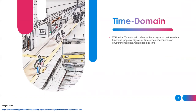In Wikipedia, time domain refers to the analysis of mathematical functions, physical signals, or time series of economic or environmental data with respect to time. In our analysis, when we start thinking about these kinds of analyses for feature extraction, we have to simplify the concept. So think about the time domain as if you are waiting on the train platform.